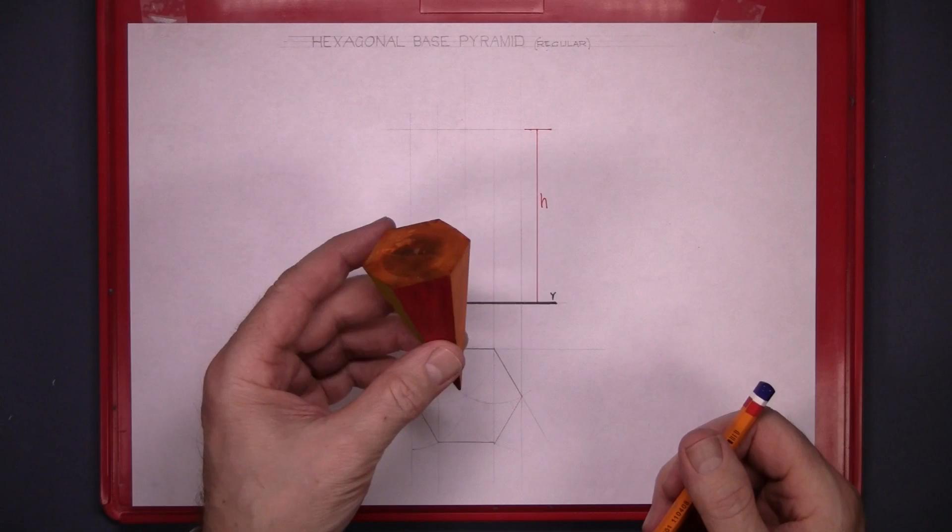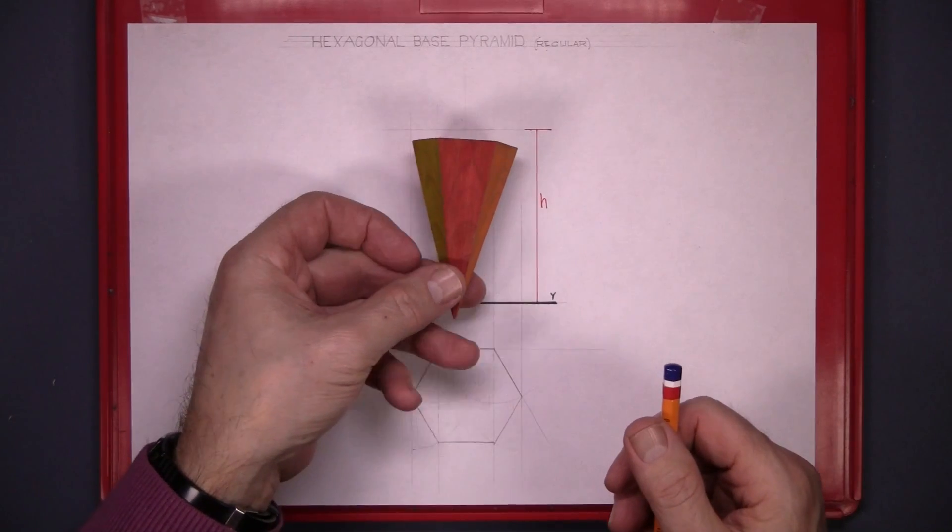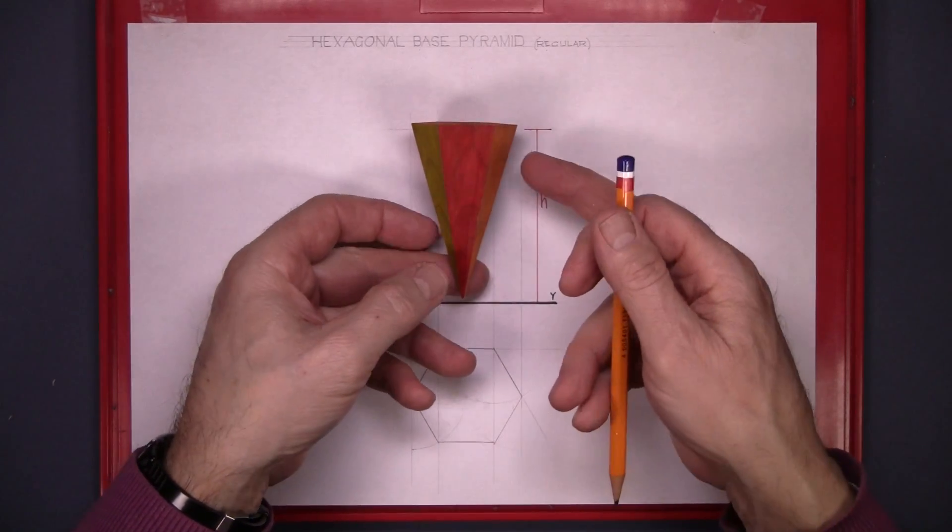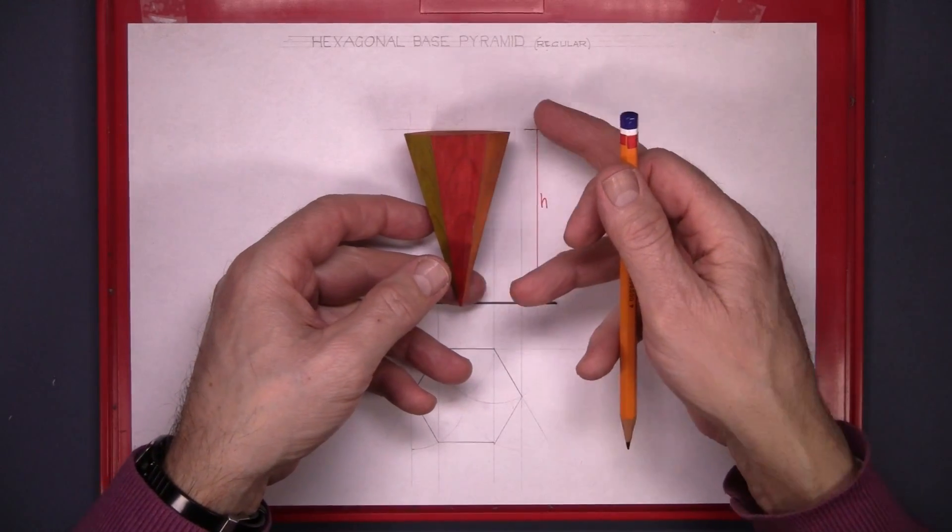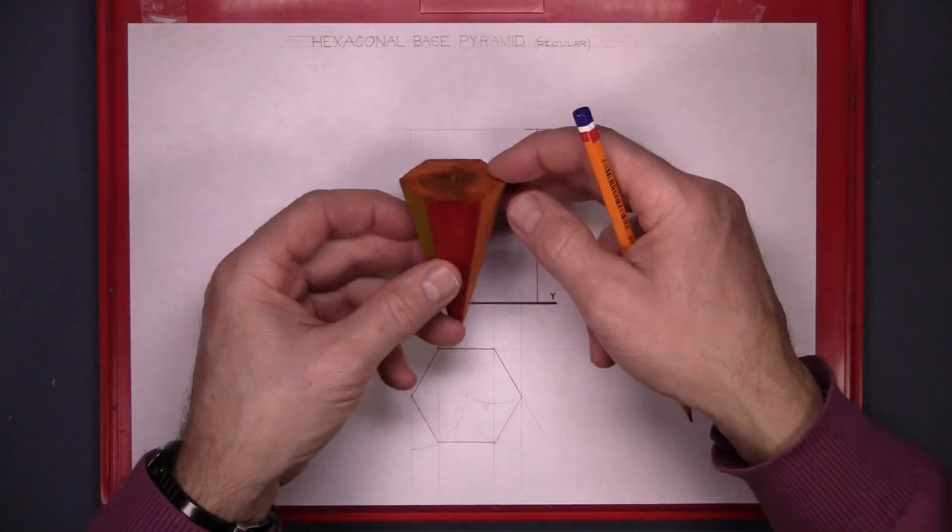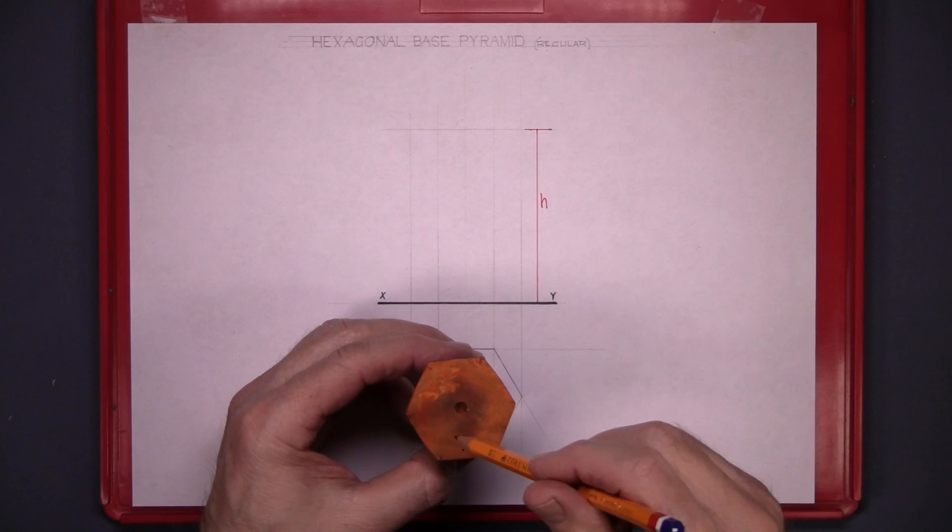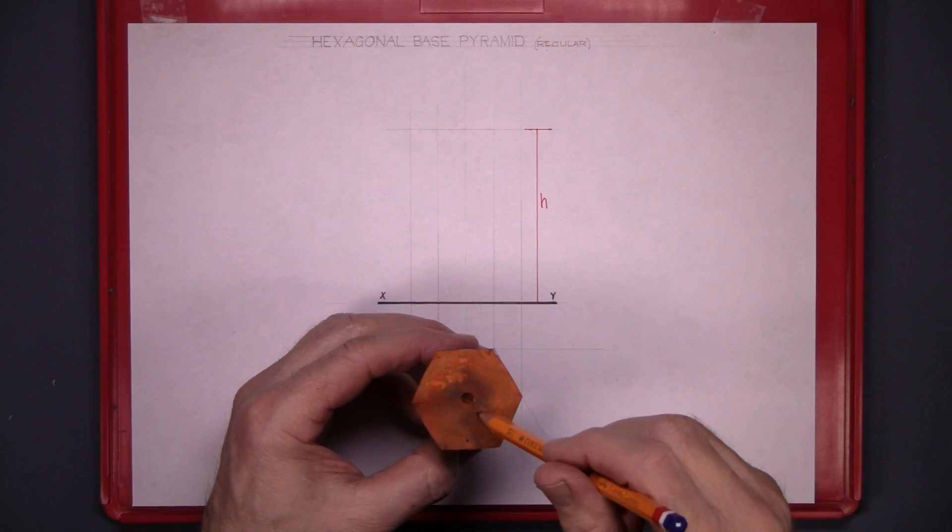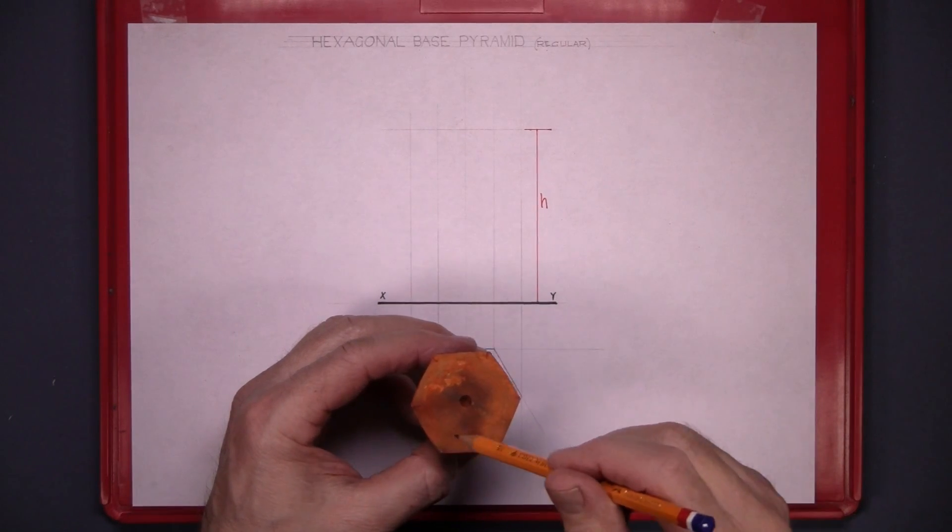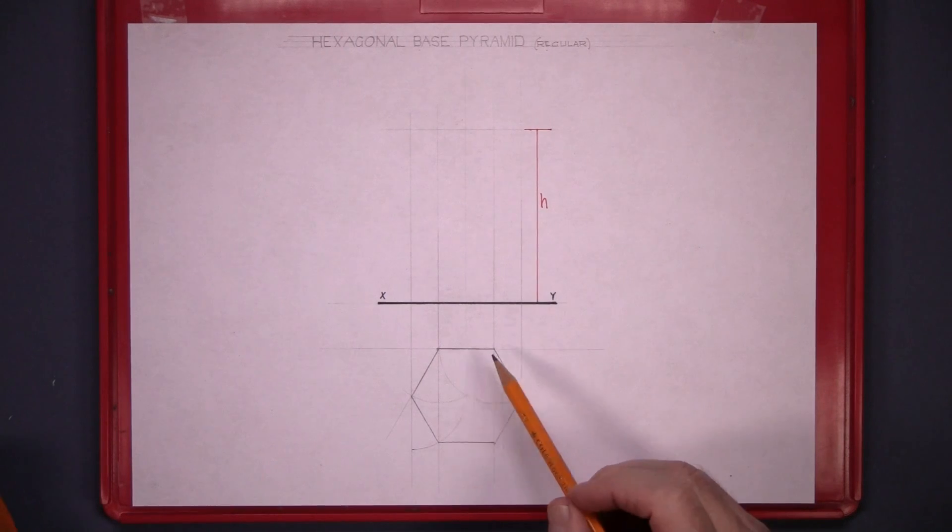What we want to do now is the elevation of this is going to be like this. In other words, it's upside down. When we look down on top of the plan, we're looking at the base, so all the lines will be dotted lines.